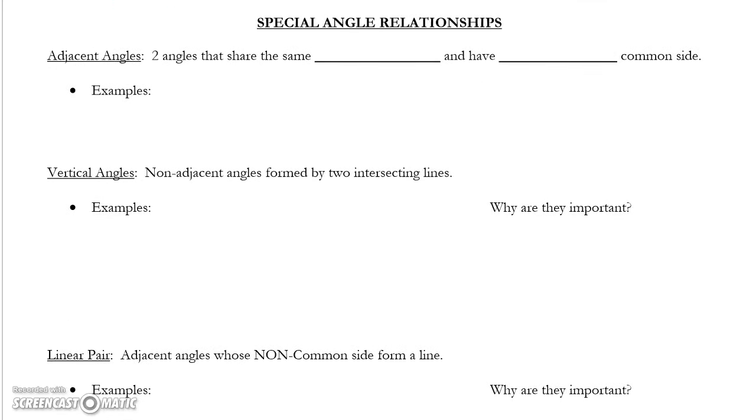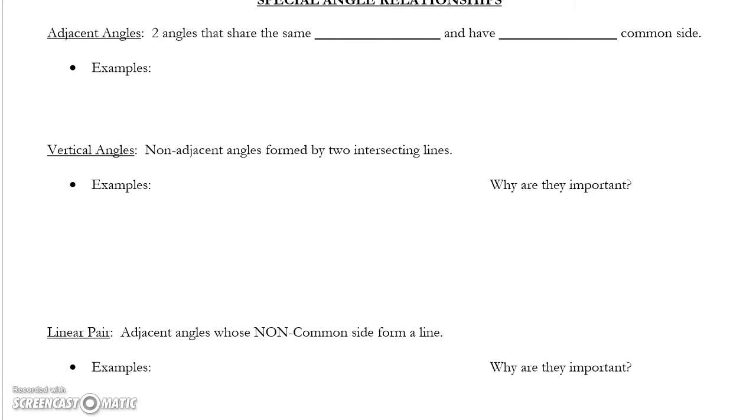Angle relationships. Three key vocab words here. Adjacent angles, vertical angles, and linear pair. Adjacent angles are two angles that share the same vertex, and they have only one common side. Now, angle 1 and angle 2 are adjacent. They share vertex B, they share ray BC. That's one common side.